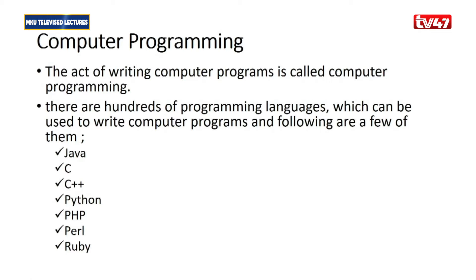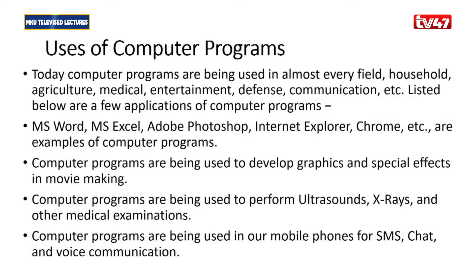We have said what a computer program is. Computer programming is simply the act of writing those computer programs. There are many programming languages available to write computer programs. Some of the popular ones include Java, C, C++, Python, PHP, Perl, and Ruby, among many others.